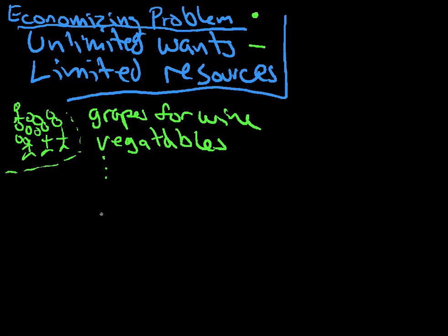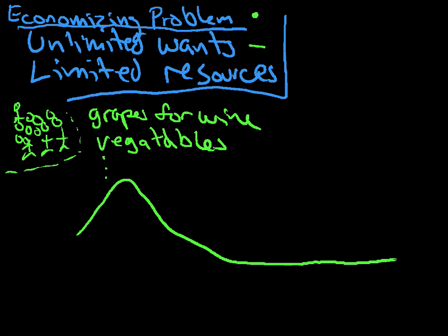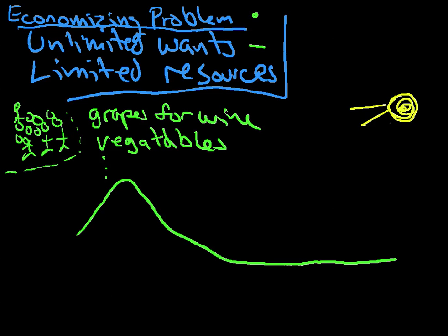Here's a picture of their land. This picture becomes very important to the discussion, so pay attention. Their land has a big hill that goes down to a nice flat valley. The sun is over here, and it's going to shine on this land in this direction — so I guess this would be west over here. The sun's coming over and shining here, and this is the land they have to work with.